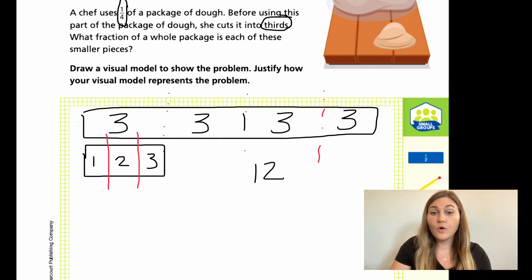So one small piece of the whole package would be one twelfth. So one small piece, when I cut it into a third, that's one twelfth of the entire thing of dough.